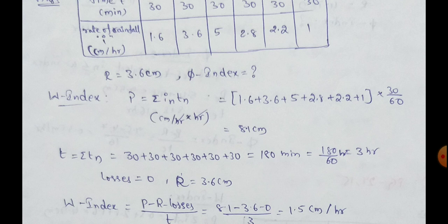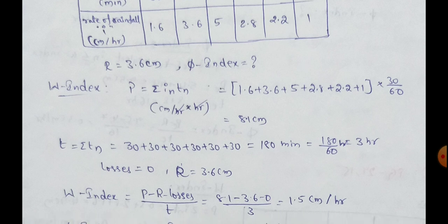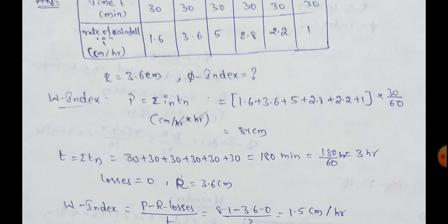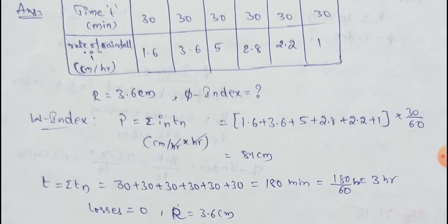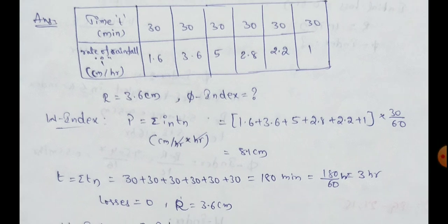First, we will find out the double index. Here, p value, precipitation equal to sigma in into tn. Here, units are important. In, intensity of rainfall, cm per hour into tn. Tn means time per hour. In the units, hours, hours cancel. The precipitation value is cm.